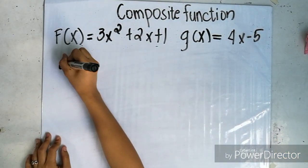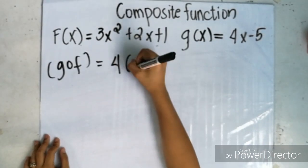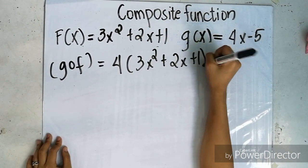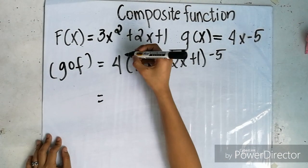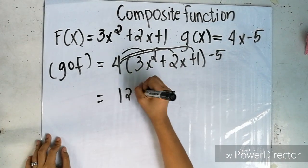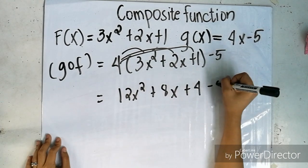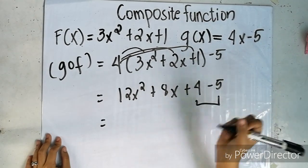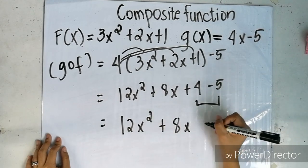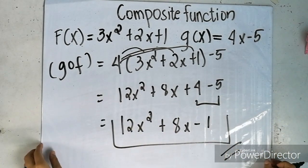g of f equals 4 times the quantity 3x squared plus 2x plus 1, minus 5. This gives 12x squared plus 8x plus 4, minus 5. Combining like terms: 4 minus 5 equals negative 1, so the final answer is 12x squared plus 8x minus 1.